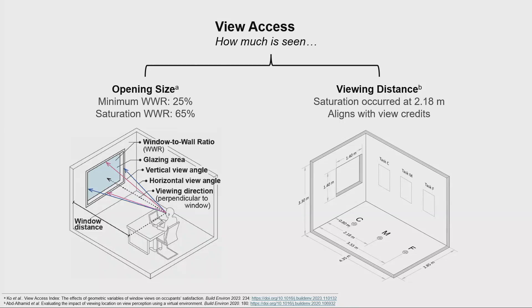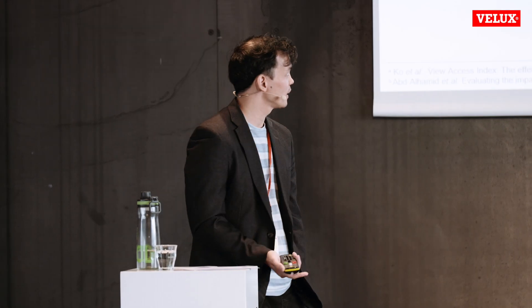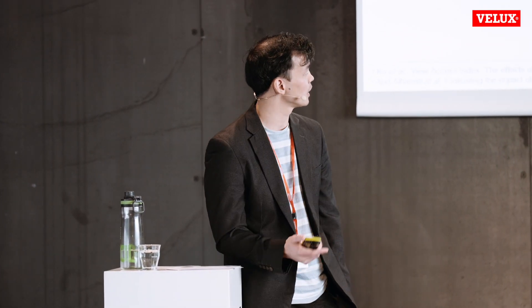When we increased the window-to-wall ratio further up to 65%, we reached a saturation point where any further increases don't produce noticeable changes in satisfaction. The second way to measure view access is the viewing distance — how far the building occupant is relative to the window. Typically, the further away you get from the window, the smaller it appears in your visual field and view access reduces. Using VR studies, we found that around just over two meters we hit the saturation point where further increases in distance don't lead to noticeable changes in view access.